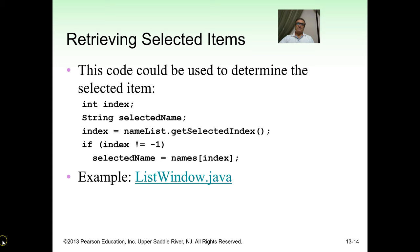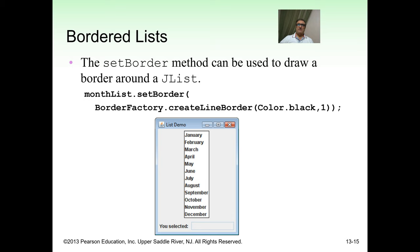The setBorder method can be used to draw a border around a JList. For example: monthList.setBorder(BorderFactory.createLineBorder(Color.BLACK)). This draws a black border around the list component, as shown in the example.